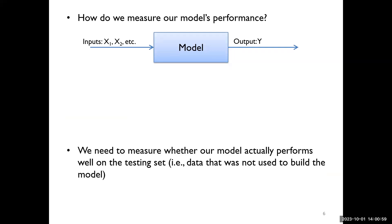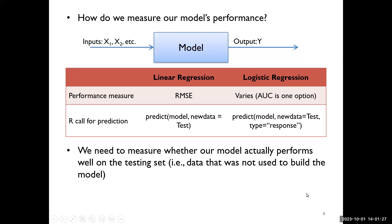How do you measure your model's performance? We need to measure whether our model actually performs well on the testing set — data that was not used to build the model. We use a training set to build the model, so this is a completely new data set that the model has never seen. If our model does really well on the testing set, we know it generalizes very well and could be effective on newer cases. For linear regression, the main parameter we use in class is RMSE. The R function to make predictions is the predict function. If you're comparing different models based on model performance, you want the model with the lowest RMSE — that's the best performing model on the test set.